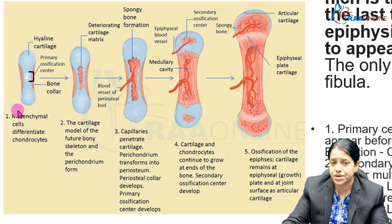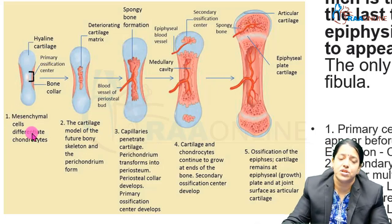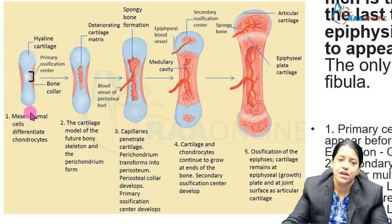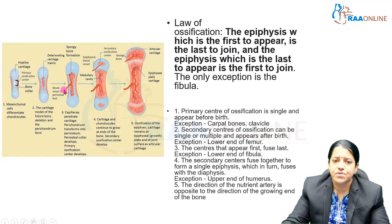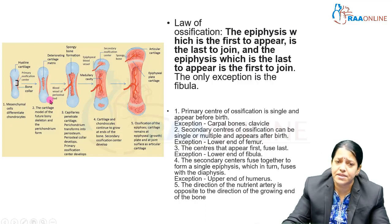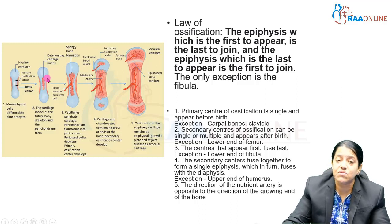In this diagram, you can see the cartilage model of a long bone, which is completely cartilaginous to start with. Mesenchymal cells derived from the mesoderm condense and form this cartilaginous model. The main cells of cartilage are chondrocytes. The model has a perichondrium covering it, and degeneration of the cartilaginous matrix begins where the centers will start appearing, along with blood supply in the center.